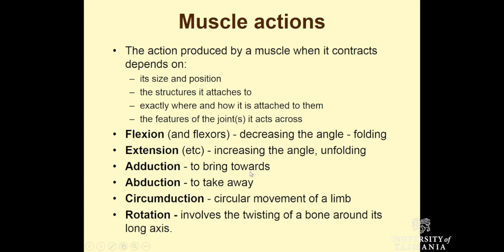Adduction means to bring towards. If you've got your arm raised out sideways like an airplane, bringing it closer towards your hips is adduction — you're bringing it towards the midline. Abduction is the reverse, moving away from the midline, extending your arms outwards like the airplane. Circumduction is the circular movement of a limb — like bowling overarm in cricket. Our thumbs can also undergo circumduction, but not many other joints can do that.